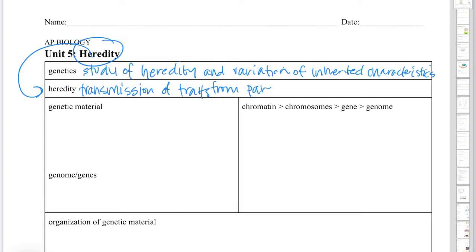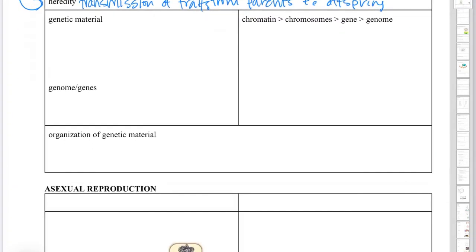It's probably a good idea for us to define heredity first. Heredity is just the transmission of traits from parents to offspring. The first thing I'm going to do is define a bunch of terminology and we're going to use that terminology to talk about heredity and genetics, because there are a lot of specific terms that we need to use in a precise way.